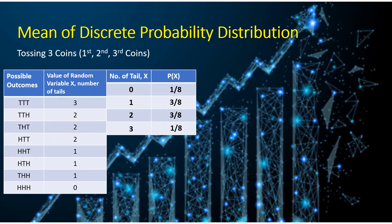Before we proceed with our example, let us first define what is a mean of a discrete probability distribution. When we say mean of discrete probability distribution, we are talking about the average or the weighted average of the possible values that our random variable can take or may occur or may happen.